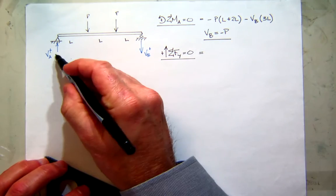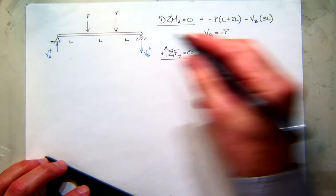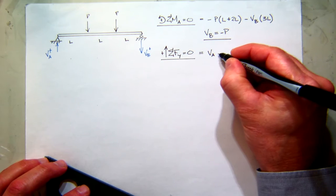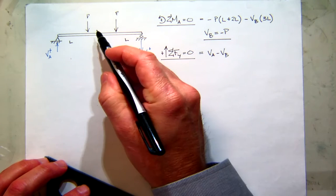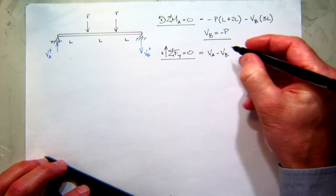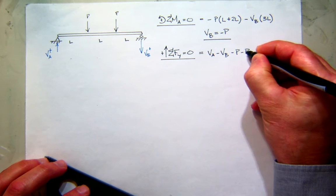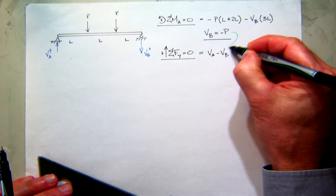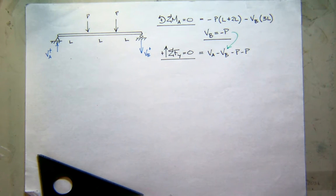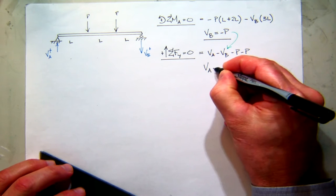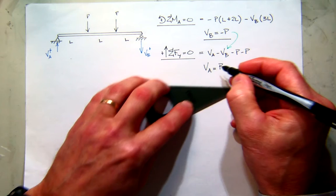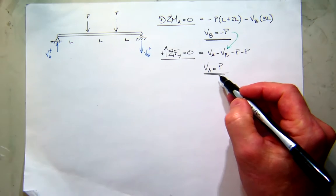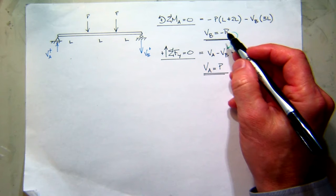Assuming up is positive: the shear at A is up, so that's positive. The shear at B is down, so that's negative. And then I've got two forces, each P, and they're also down — so that'd be minus P, minus P. I've already solved for the shear at B, so I can plug that in. When I solve for the shear at A, it's equal to P.